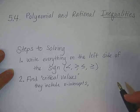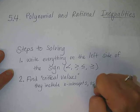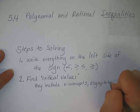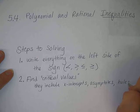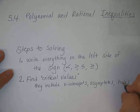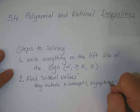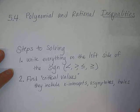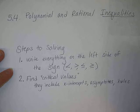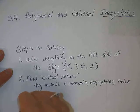Another place where our graph can change from positive to negative or negative to positive is at asymptotes, so asymptotes are also critical values. The last ones to watch for are holes in the graph — places that make the denominator zero but get factored and reduced out of the problem.